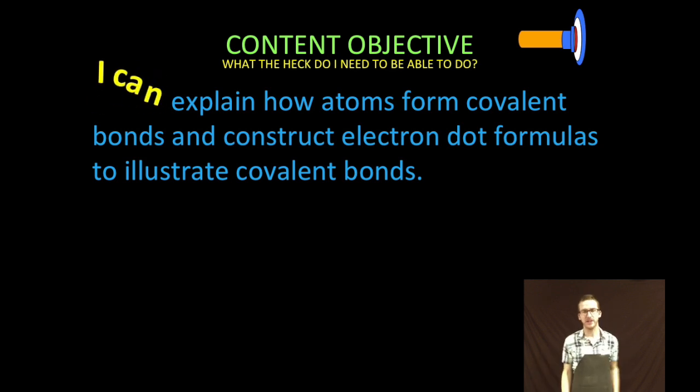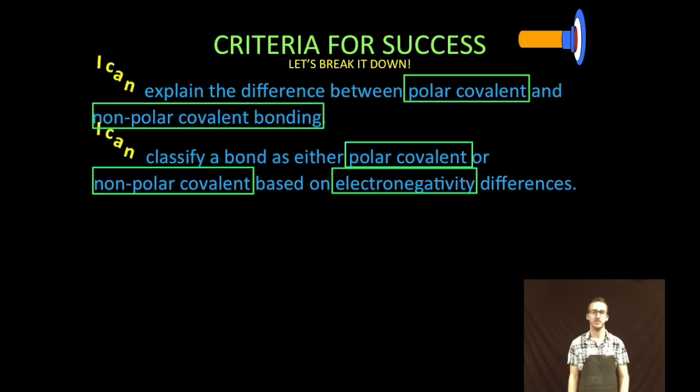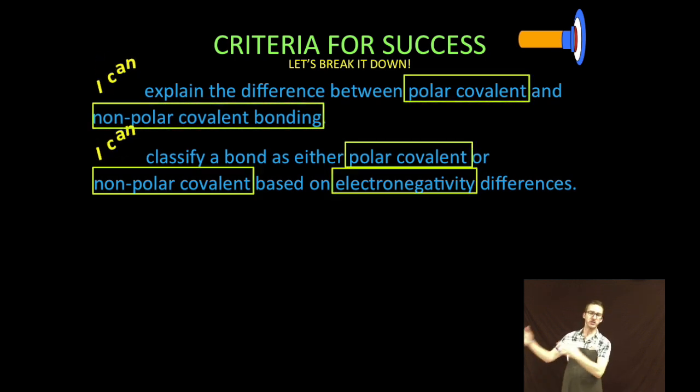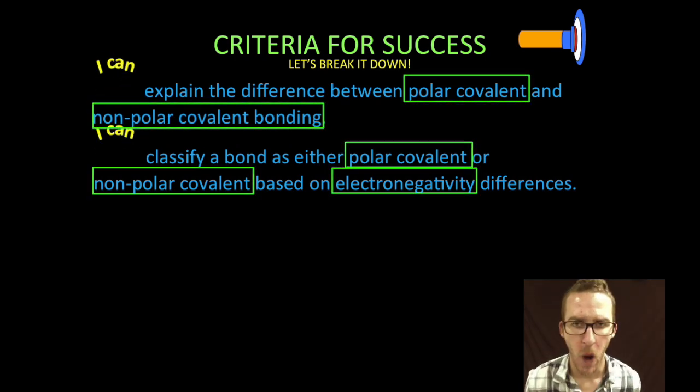We are going to explain how atoms form covalent bonds and construct electron dot formulas to illustrate covalent bonds. Turns out there are two types of covalent bonds and we are going to explain the difference between polar covalent and nonpolar covalent bonding. And then we are going to classify a bond as either polar covalent or nonpolar covalent based on electronegativity differences. Those periodic trends coming on back, never going away.